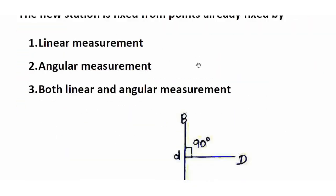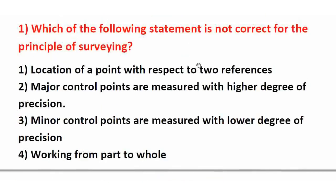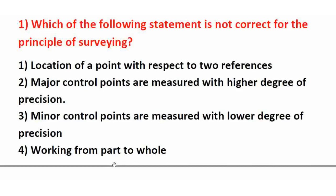These two are the principles of surveying. Now, previous exam questions: Which of the following statements is NOT correct for the principle of surveying? Location of your point with respect to two reference points; major control points are measured with high degree of precision; minor control points are measured with lower degree of precision; working from part to whole. The first three are correct. Working from part to whole is NOT correct — the right answer is option 4.